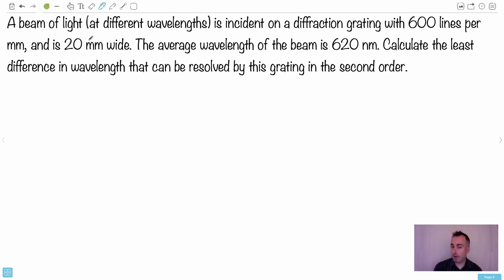Here, so we have a beam of light at different wavelengths. Okay, so this is not monochromatic. It's lots of different wavelengths here. It's incident on a diffraction grating with 600 lines per millimeter, and that diffraction grating is 20 millimeters wide. We'll see what to do about that in a second. We have the average wavelength of the beam is 620 nanometers, so we're going to use that for lambda.